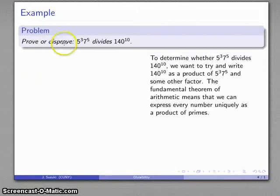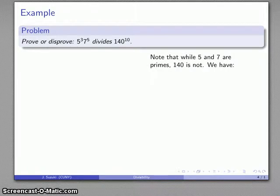So, to determine whether 5 to the 3rd, 7 to the 5th, divides 140 to the 10th, what we'd like to do is we'd like to see if 140 to the 10th can be written as a product of 5 to the 3rd, 7 to the 5th, and something else. Now, the Fundamental Theorem of Arithmetic says that we can express every number uniquely as a product of primes. And so, what we should do is we should try and write both of these numbers in terms of a prime product. Now, 5 and 7 are primes, so this is the unique expression of whatever this number is in terms of its prime factors.